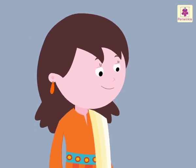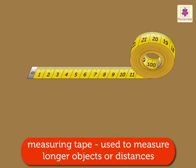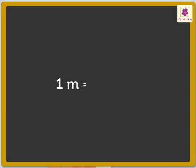But longer objects cannot be measured with this small ruler. They are measured in a bigger unit called metre. We use a measuring tape to measure longer objects or distances. Metre is written in short as M. 1 metre is equal to 100 centimetres.